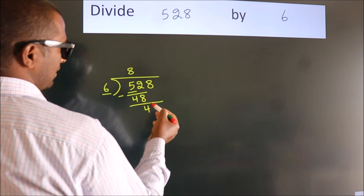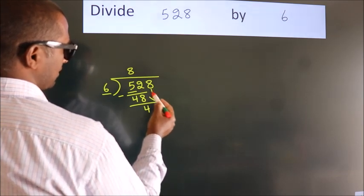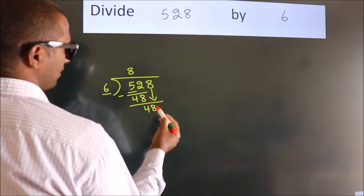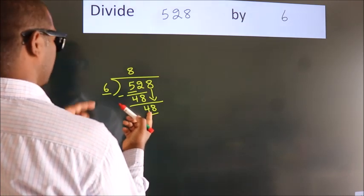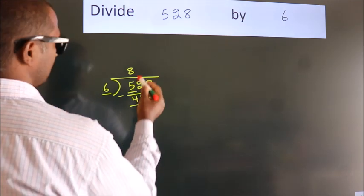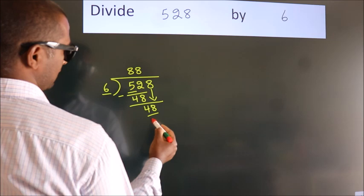After this, bring down the beside number. So, 8 down. So, 48. When do we get 48? In the 6 table. 6 times 8, 48.